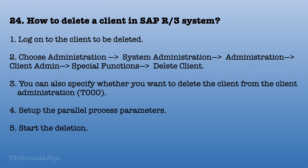How to delete a client in SAP R/3? Step 1: Log on to the client to be deleted. Step 2: Choose Administration > System Administration > Administration > Client Admin > Special Functions > Delete Client. Step 3: Specify whether to delete the client from the client administration table T000. Step 4: Set up the parallel process parameters. Step 5: Start the deletion.